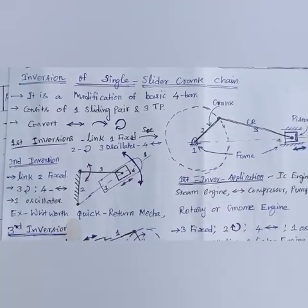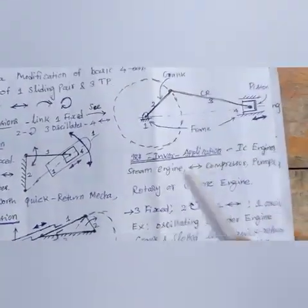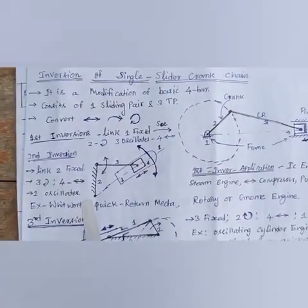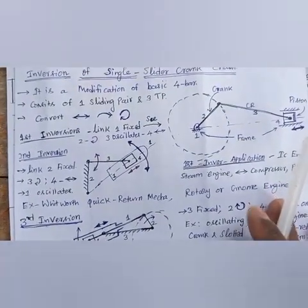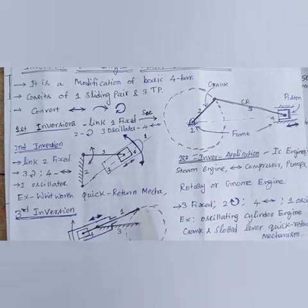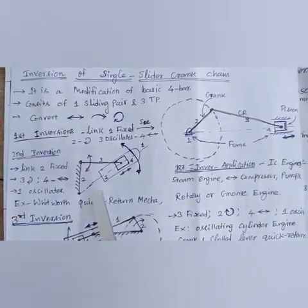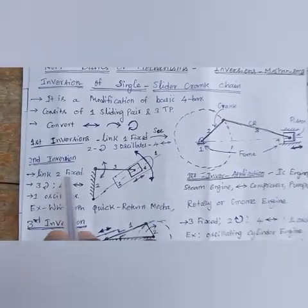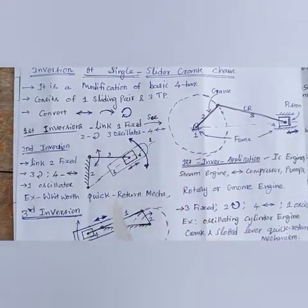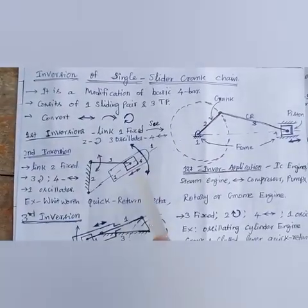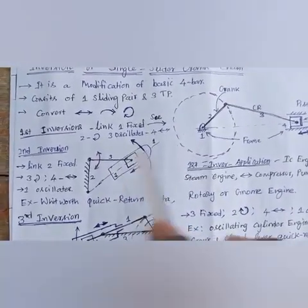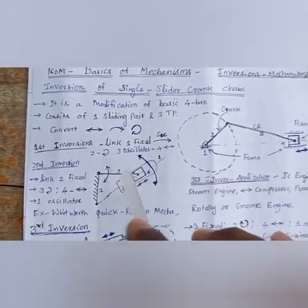Second inversion: link two is fixed. Here, link three rotates and link one oscillates — link four reciprocates. The practical application of the second inversion is the Whitworth quick return motion mechanism.